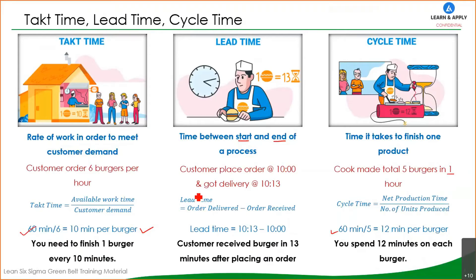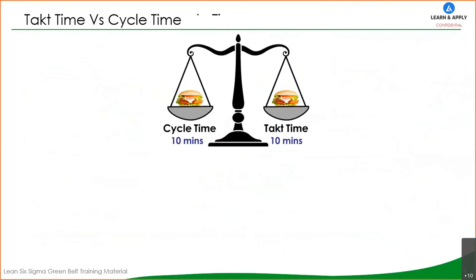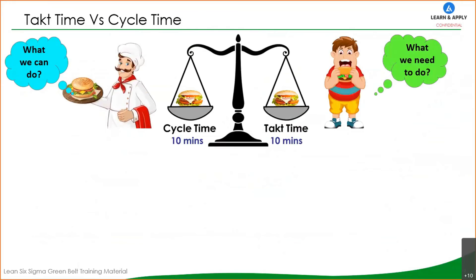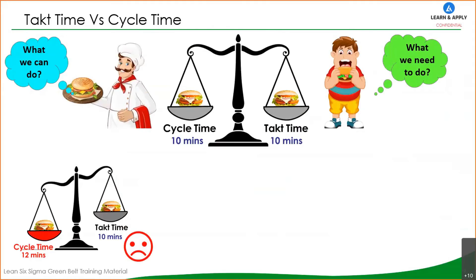From this simple example, it should be very clear what takt time, lead time, and cycle time are. If cycle time equals takt time, then we are delivering exactly what the customer wants. But if the cycle time is more — in our case, cycle time is 12 minutes and takt time is 10 minutes — we are not in a position to meet the customer demand. In that case, we need to reduce the cycle time by at least two minutes.